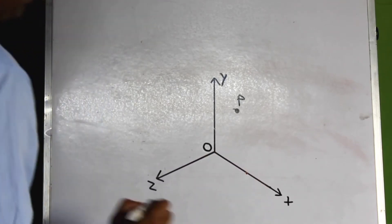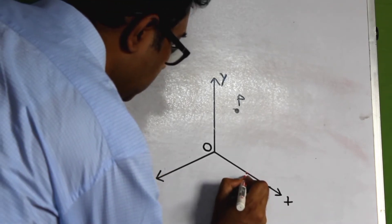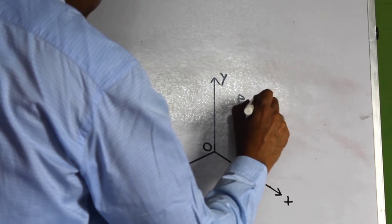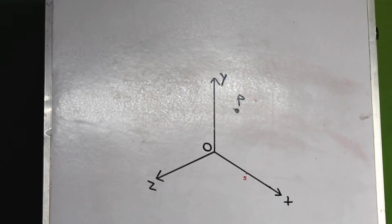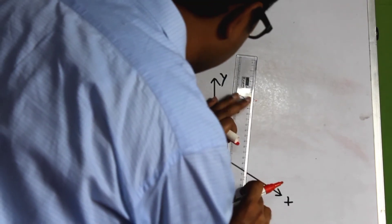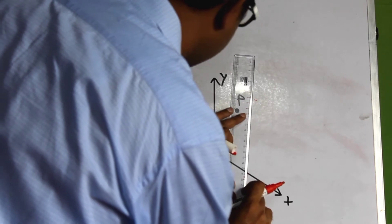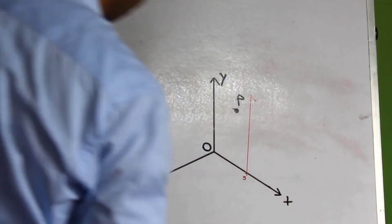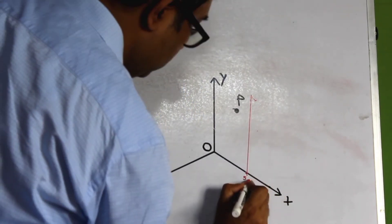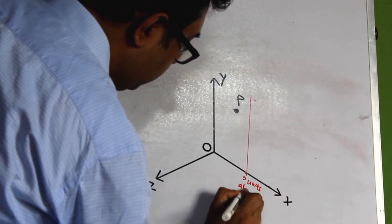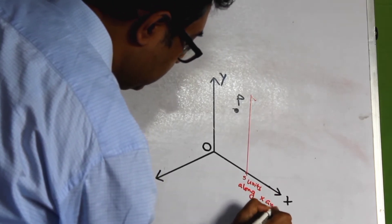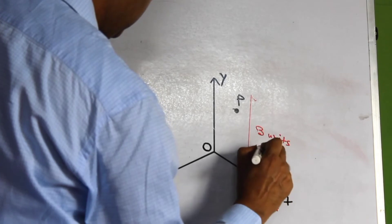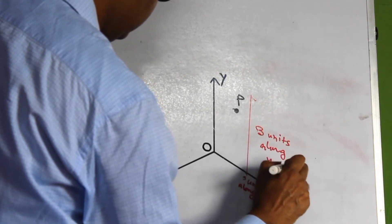So five units along the x-axis. We have to move three units in this direction — the drawing is not actually presented to scale. So three units along the y-axis.